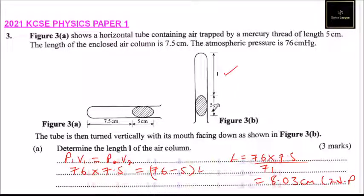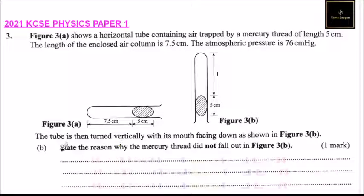Let's have a look at part B of this question. Part B, we are told we have the same information. State the reason why the mercury thread did not fall out in figure 3B.